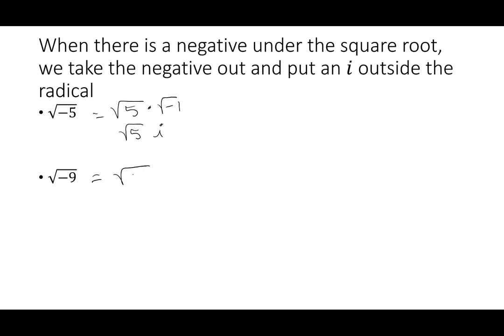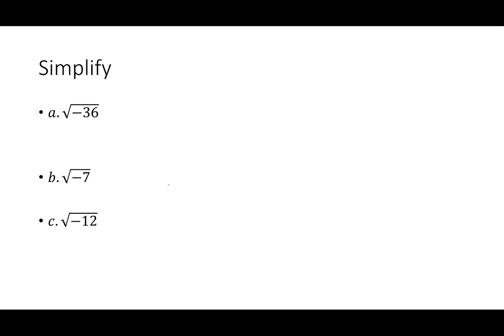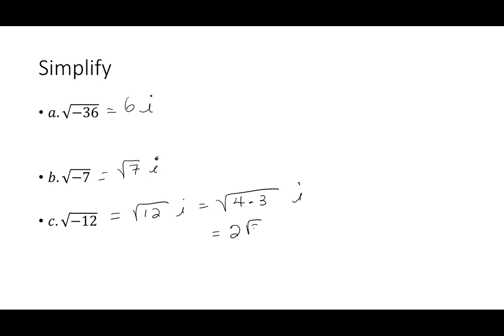The square root of negative 9 can be written as the square root of 9 times the square root of negative 1. The square root of 9 is 3, and the square root of negative 1 is i, so the square root of negative 9 becomes 3i. For negative the square root of 36, the square root of 36 is 6. The square root of negative 7 becomes i times the square root of 7. The square root of negative 12 is square root of 12 times i, and since 12 is 4 times 3, that simplifies to 2 square root of 3i.